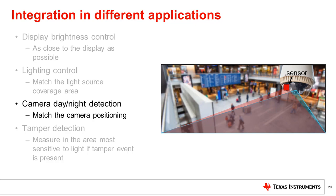For security camera applications, there is a camera imaging an area of interest, and the light sensor is used to optimize the camera's settings across all lighting levels. In this case, the light sensor's angular characteristics should be set to match the camera's field of view as closely as possible for best performance. In the example shown, the light sensor is placed very close to the camera, and both orientation and half angle are matched with the camera.